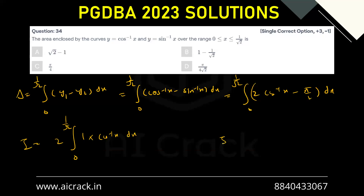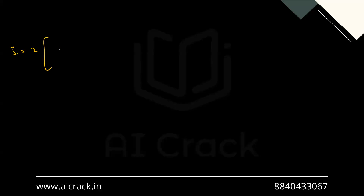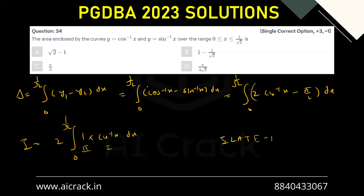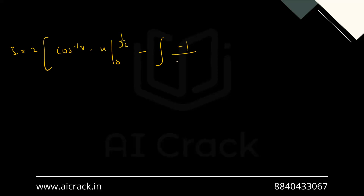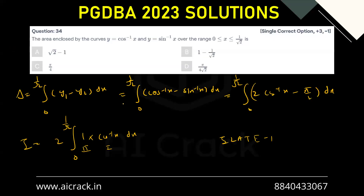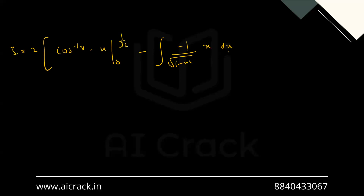According to the ILATE rule, the inverse function comes first, so cos⁻¹x is the first function and 1 is the second function. So this integral becomes: first function times integral of second, minus integral of (derivative of first times integral of second) — that is, cos⁻¹x times x minus integral of minus 1 over √(1 minus x²) times x dx, evaluated from 0 to 1/√2.